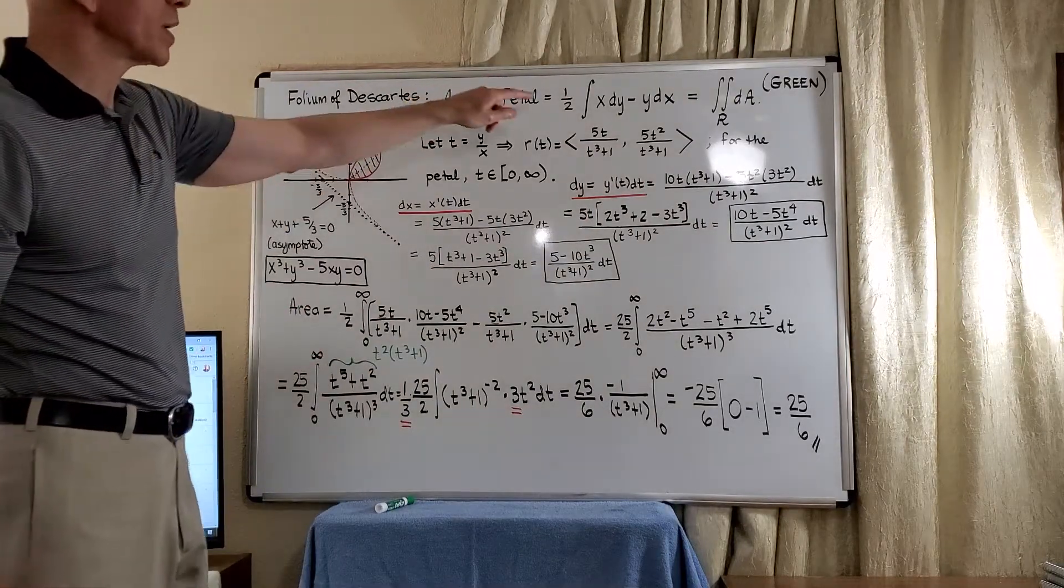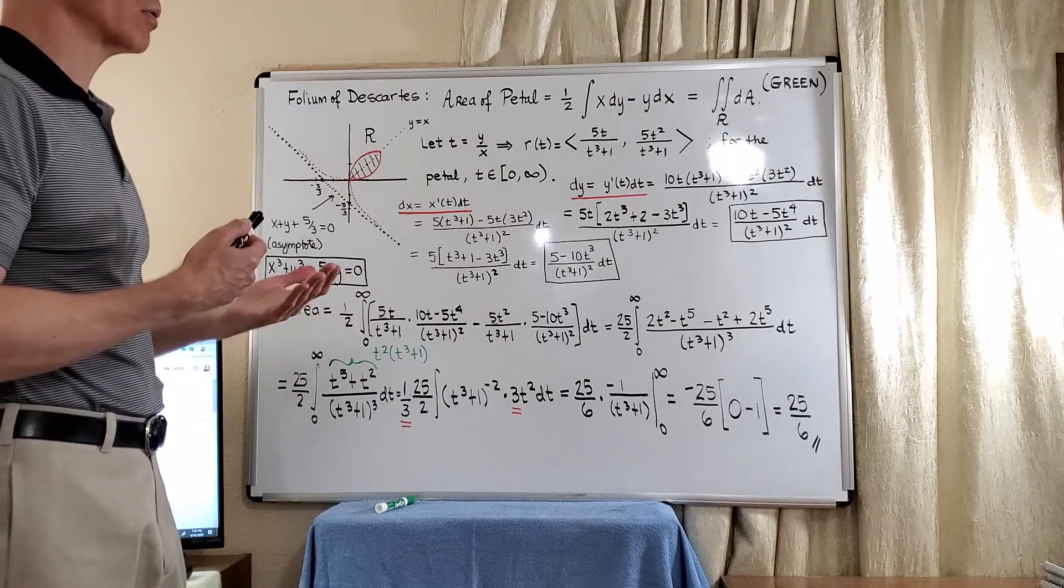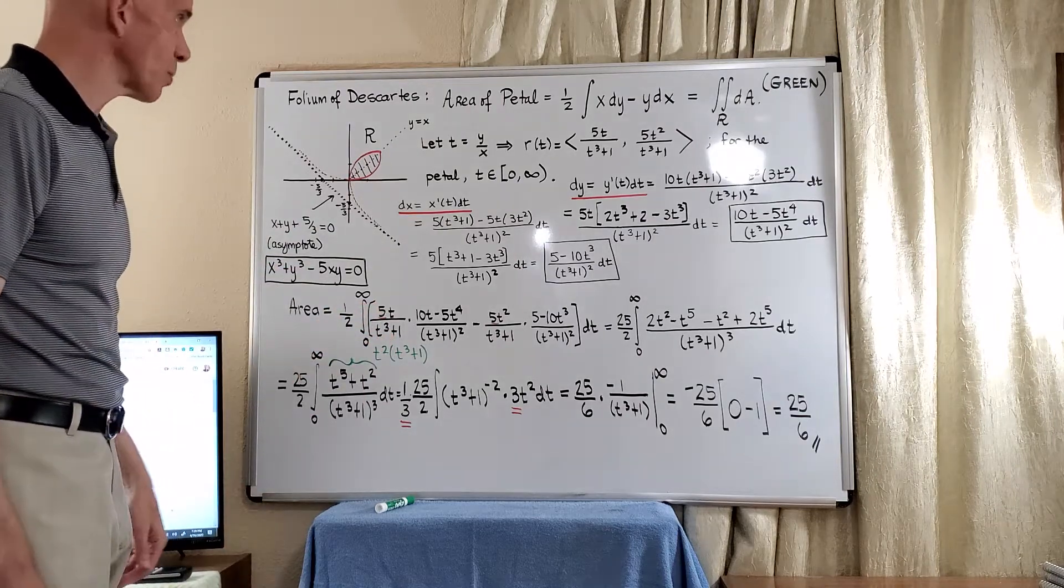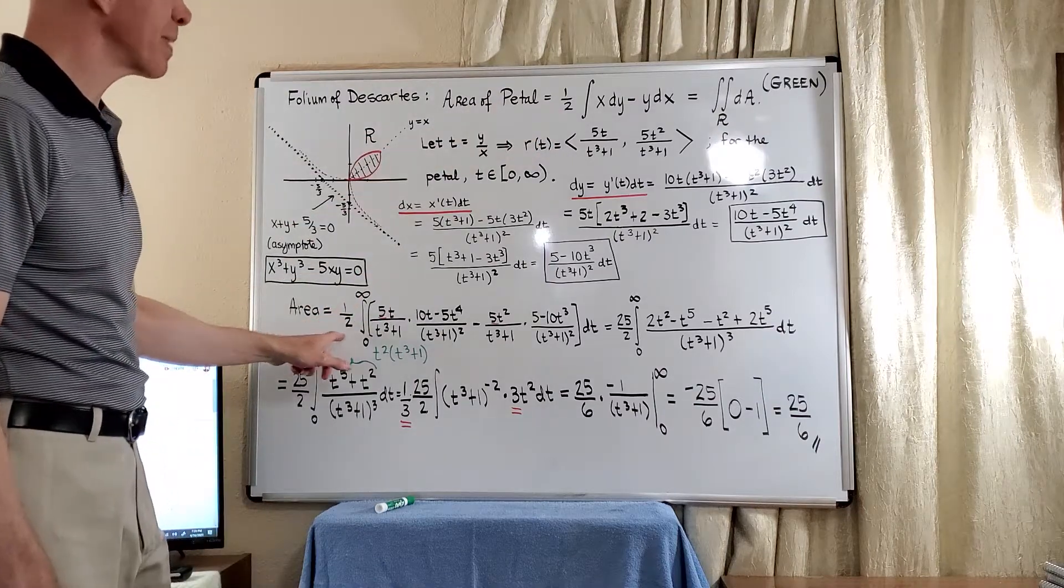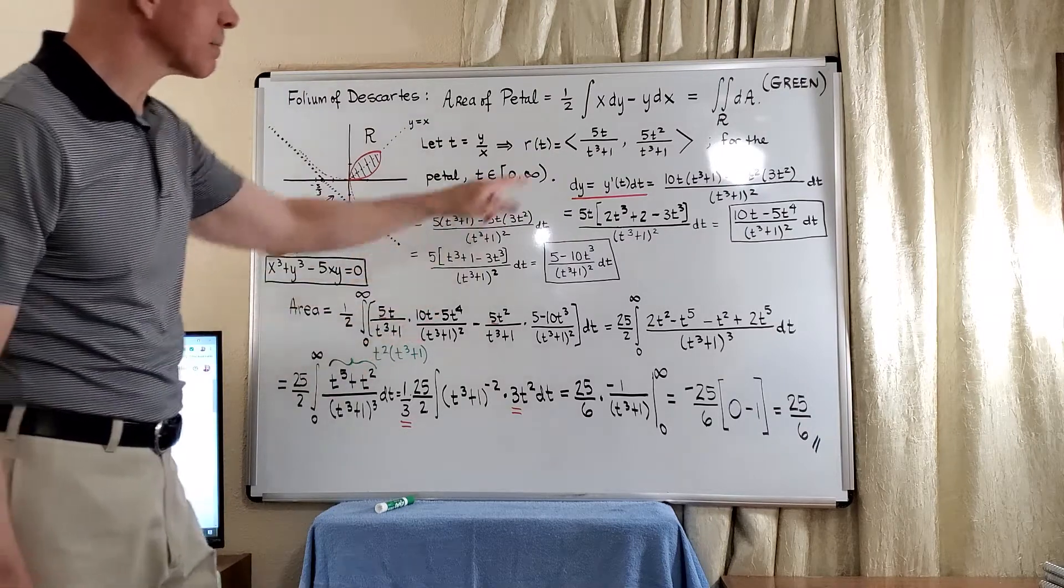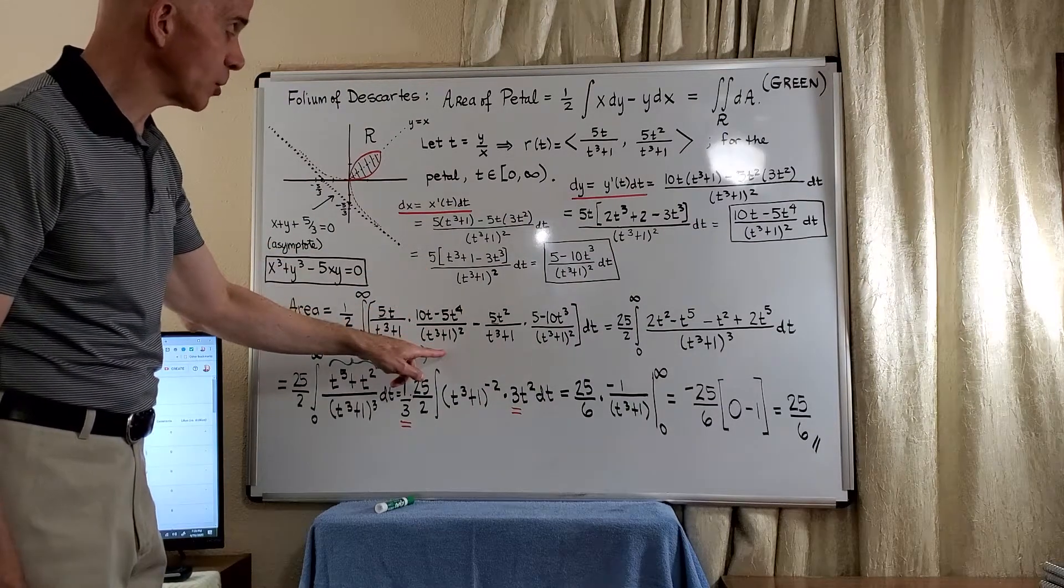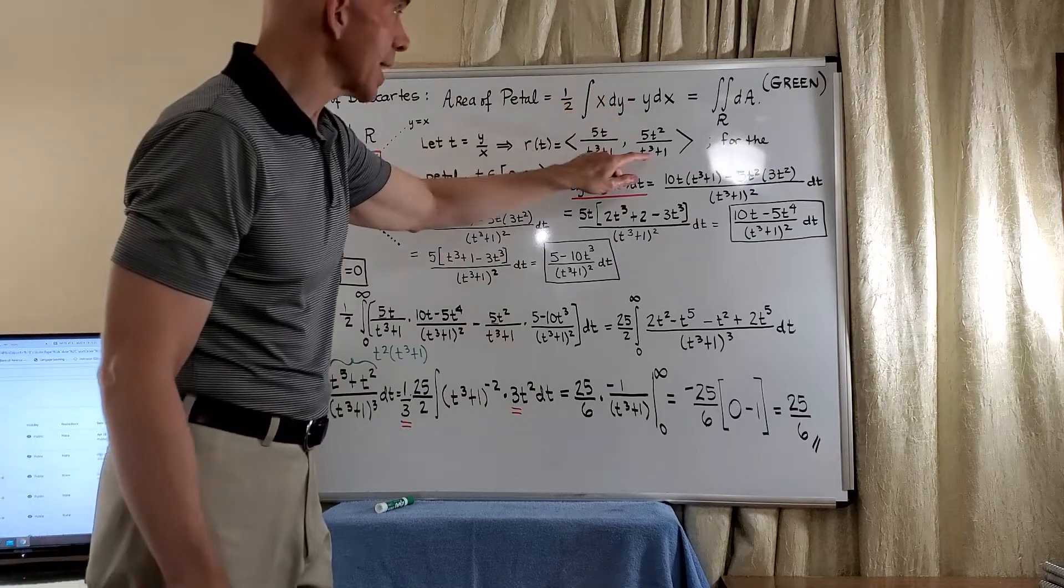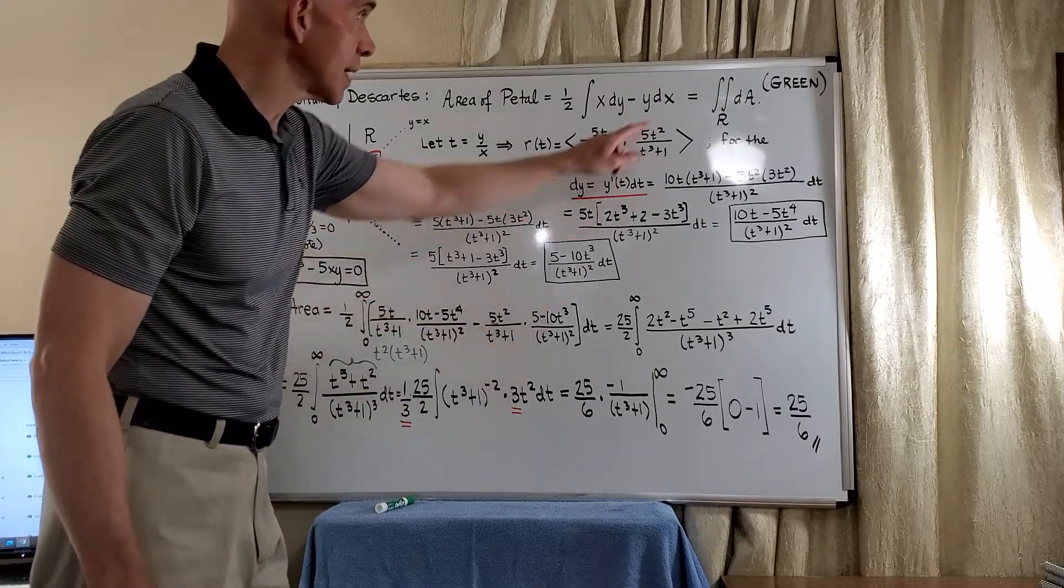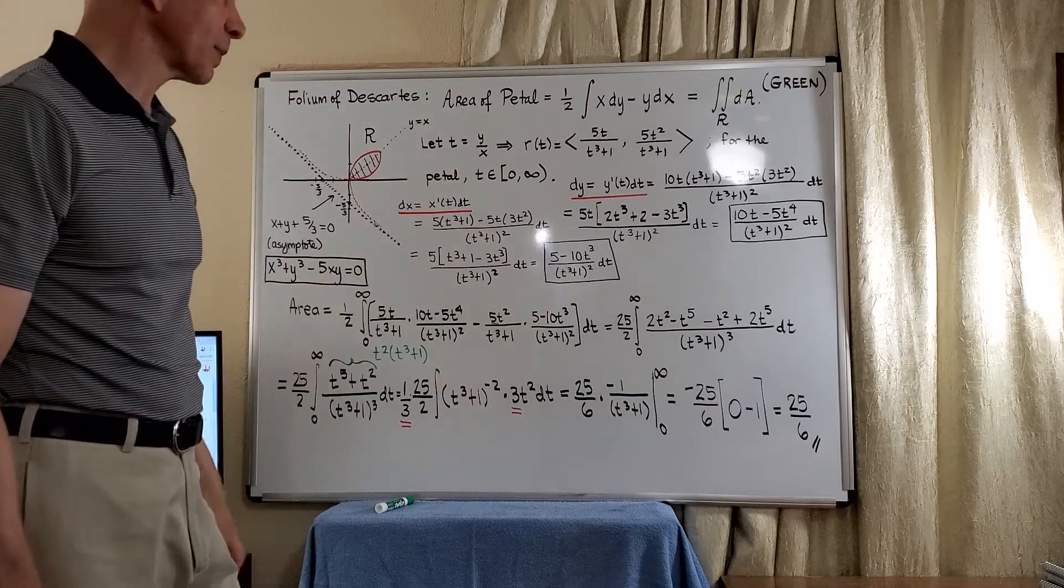Now we go to this. Even though this problem is long, it's doable by Green's theorem. Without it, it would be difficult to compute. Now we just fill in here. We have the 1 half, and now we need the x, which is 5t divided by t cubed plus 1 times dy, which we have here: 10t minus 5t to the fourth divided by t cubed plus 1 quantity squared, minus the y, which is 5t squared divided by t cubed plus 1 times dx, 5 minus 10t cubed divided by t cubed plus 1 quantity squared.